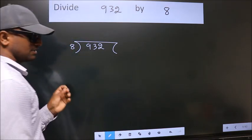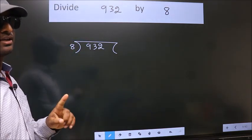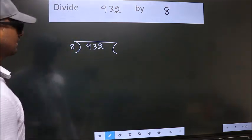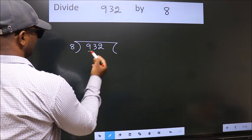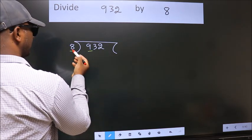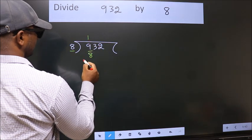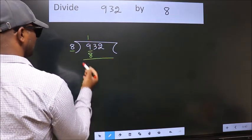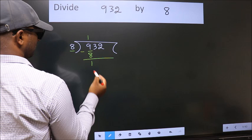This is your step 1. Next, here we have 9, here 8. A number close to 9 in the 8 table is 8 once 8. Now we should subtract. We get 1.